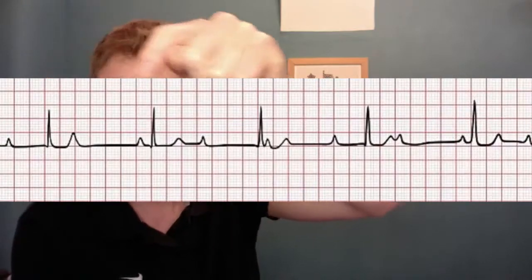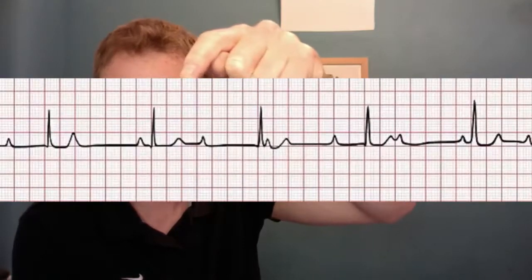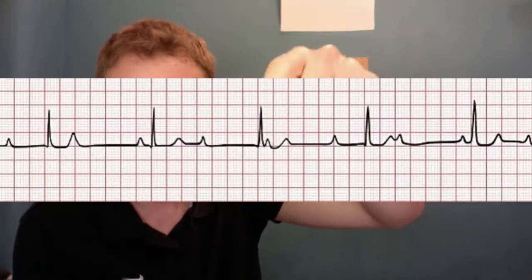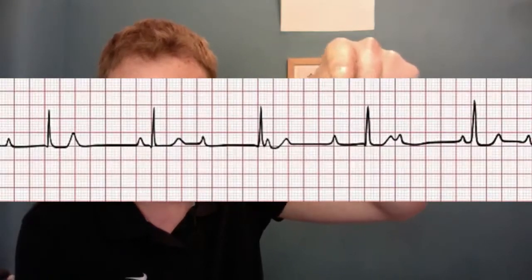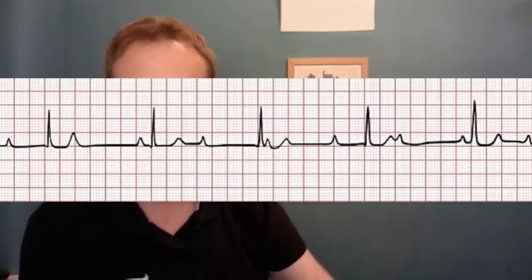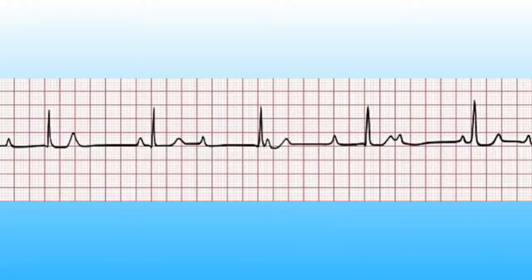A P wave with what looks like a normal PR interval. Then a P wave with a huge PR interval. Then a P wave that seems to be buried in the ST segment. Then a big PR segment. Then a P wave buried in the T wave. The P wave is completely and utterly erratic. This is complete heart block.